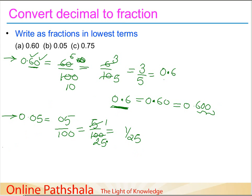I am sorry, it's 5 divided by 5 equals 1 and 5 divided by 100 equals 20. So this becomes 1 by 20. Let's try and see the next one, 0.75.